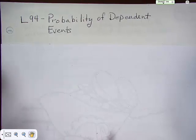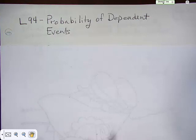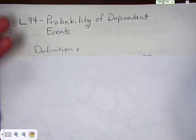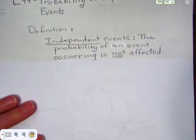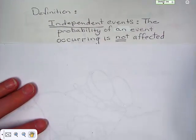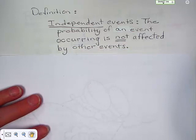We're really used to doing the probability of independent events. Let's see what that is, just so you're aware of what that is. A probability of independent events is the probability of an event occurring not affected by any other kind of event.